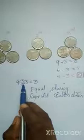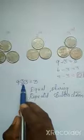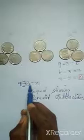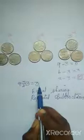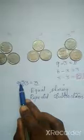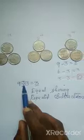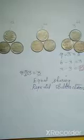At starting we have 9 coins. So 9 divide by 3 equals 3 — finally each person has 3 coins, that is the answer. This is the question and this is the symbol of division. Today we are going to learn division. In this activity, we know division is equal sharing, and division is nothing but repeated subtraction.